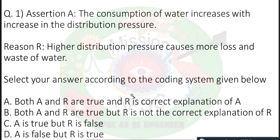First question: The first statement (A) is 'The consumption of water increases with increase in the distribution pressure.' The second reason (R) is 'Higher distribution pressure causes more loss and waste of water.' The question asks to select your answer according to the coding system given below. Option A: both A and R are true and R is the correct explanation of A.